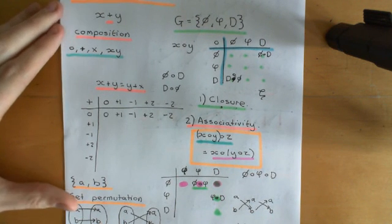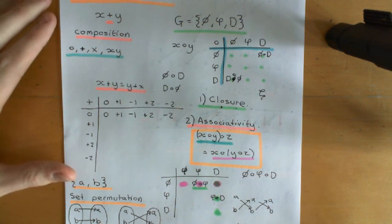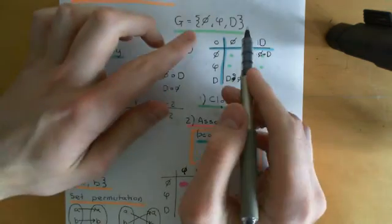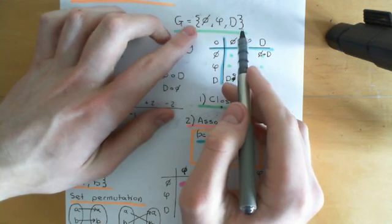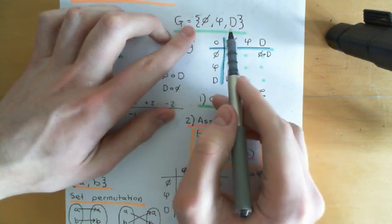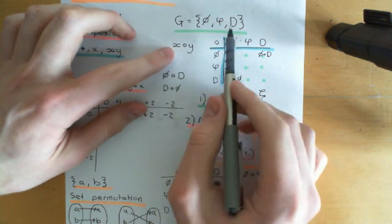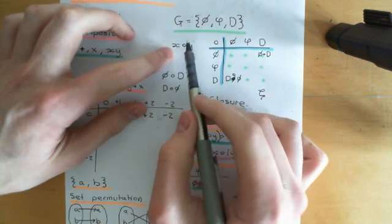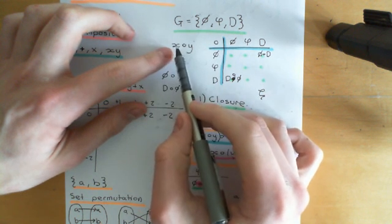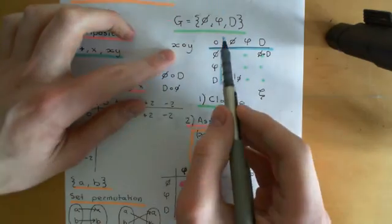Welcome back to this next video in which we are discussing the definition of a group. What I've discussed is if we're going to build a group, what we start off by doing is creating a set of symbols, and then we define a single composition law on this set of symbols. So we define what any combination of two elements within this set composed with one another is — we define for an arbitrary little x and an arbitrary little y what x composed with y is equal to.